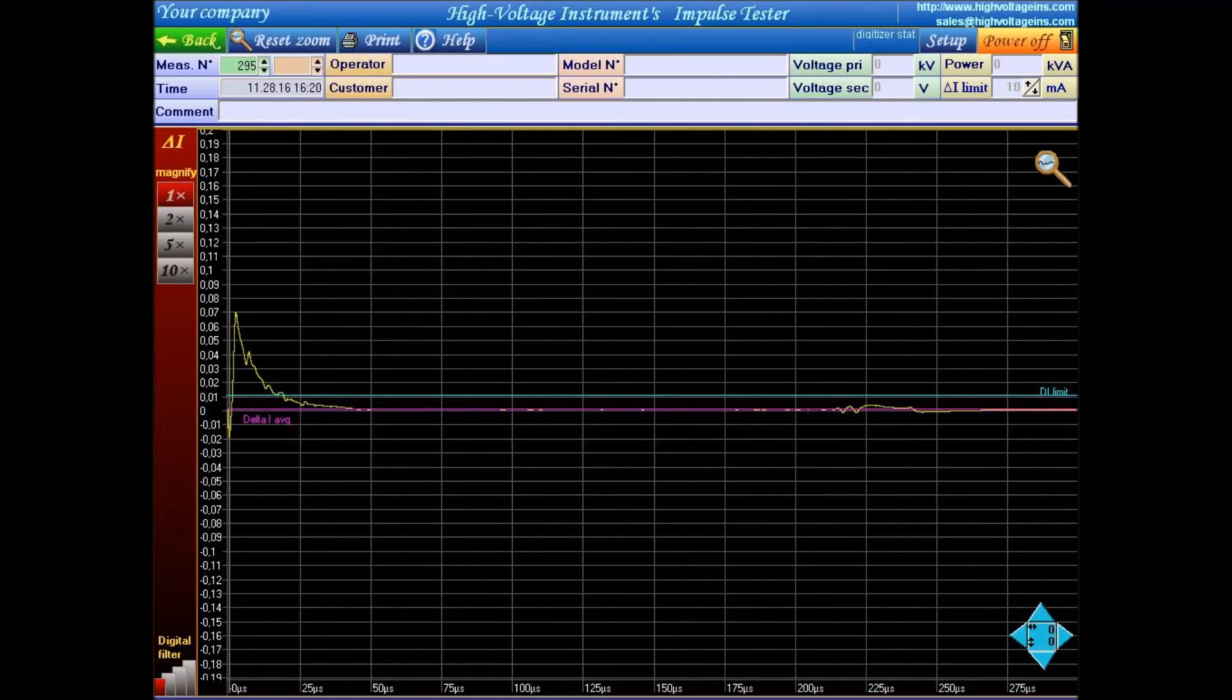The current difference will show the transformer is good or bad. We calculated from the transformer design. Single turn fault would increase the full current wave by 10 milliamp, which is a blue line.